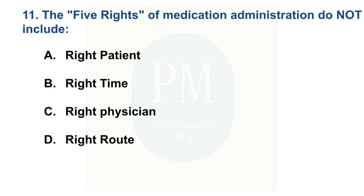The five rights of medication administration do not include. Option A: Right patient. Option B: Right time. Option C: Right physician. Option D: Right route. The correct option is Option C — Right physician.